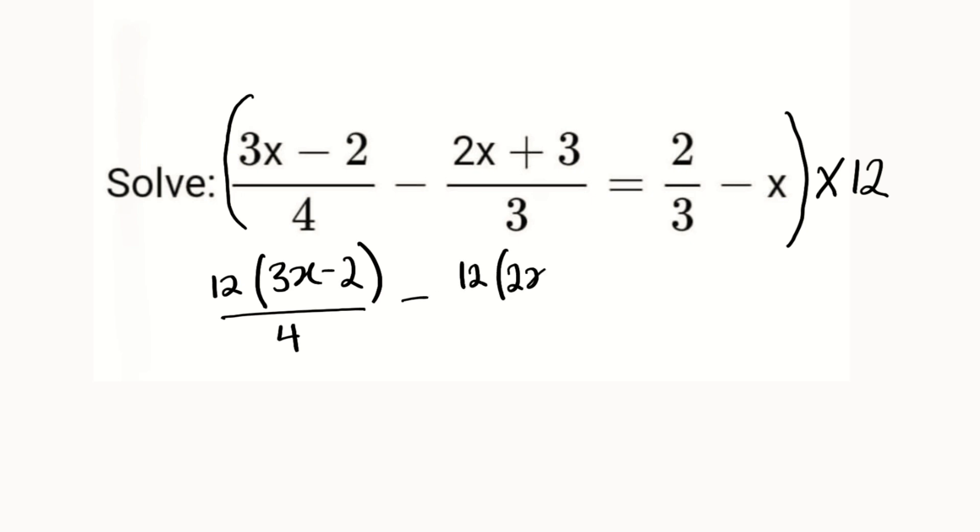Minus 12 again, multiplied by (2x + 3) divided by 3. This equals 12 multiplied by 2 divided by 3, minus 12 multiplied by x, which is the same thing as 12x.